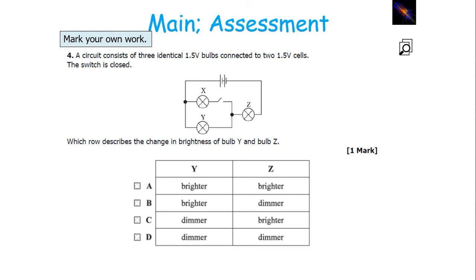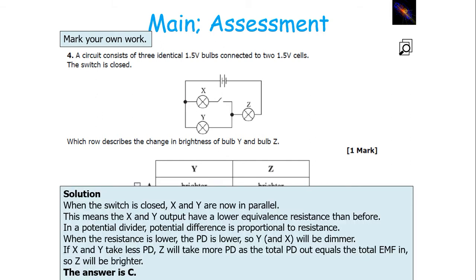In this next question, if the switch is closed, X and Y will become parallel to each other. When they're in parallel, they'll have a lower equivalent resistance, because there are more paths in the circuit. So the resistance in that particular output will be lower. In a potential divider, potential difference is proportional to resistance, so when the resistance is lower in X and Y, the equivalent resistance is lower, the PD is lower, and therefore X and Y will be dimmer.